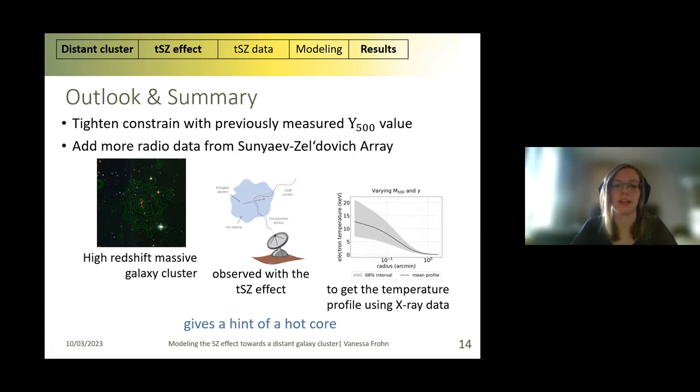In summary, I observed the high redshift massive galaxy cluster with the tSZ effect to get the temperature profile using additional X-ray data. This gives the hint of a hot core, which is in agreement with our theory. Thank you for your attention and I'm happy to take questions.